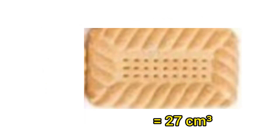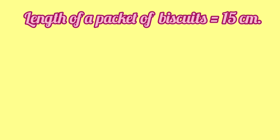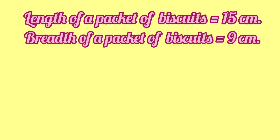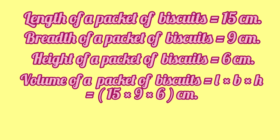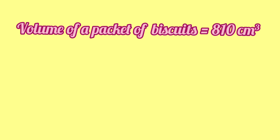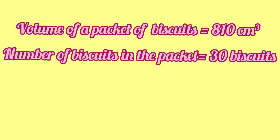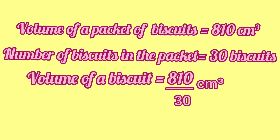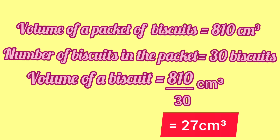This is the volume of one biscuit. We will solve the question like this. Length of the packet of biscuits equals 15 cm, breadth 9 cm, and height 6 cm. Volume of the packet equals 15 into 9 into 6 — we get 810 cm³. Volume of one biscuit equals volume of the packet divided by number of biscuits. Number of biscuits in the packet is 30. So we divide 810 cm³ by 30 — we get 27 cm³, which is the volume of one biscuit.